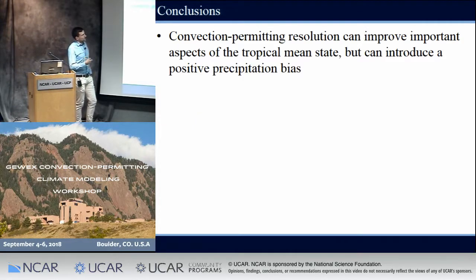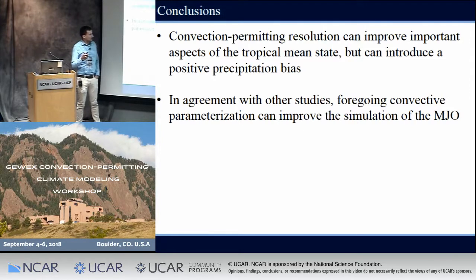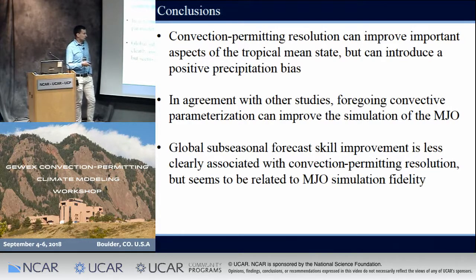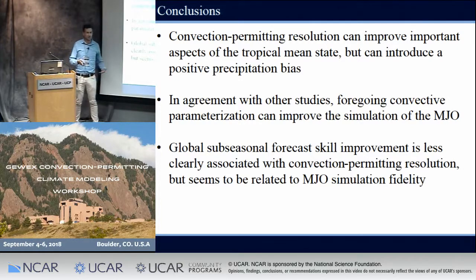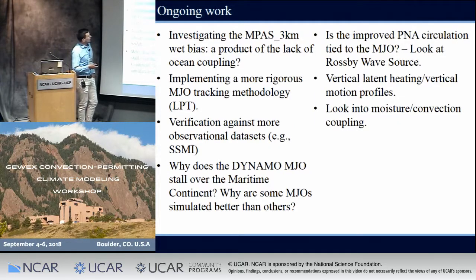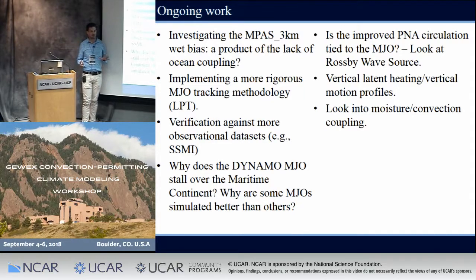To conclude: convection-permitting resolution can improve many important aspects of the tropical mean state but also introduces a bias. In agreement with other studies implementing convection-permitting resolution, we've improved the MJO in at least two out of three cases. Global sub-seasonal forecast skill improvement is not so clearly associated with whether you use convection-permitting resolution — we have a small sample size — but it seems to be related to our MJO fidelity, and that's a relationship we want to strengthen in the future. There's still so much to do with this output, so if anyone wants to collaborate, let me know.